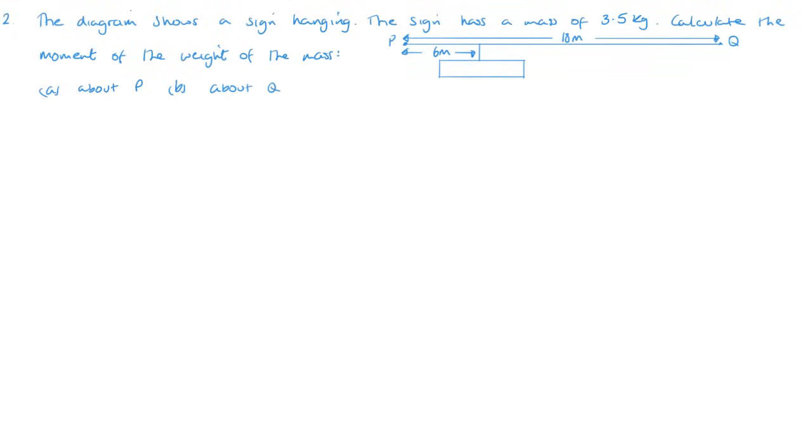Question two shows a sign hanging. The sign's mass is 3.5 kilograms, so that is 3.5 G newtons hanging down. Calculate the moment of the mass about P. So that's going to be 3.5 G times by 6, because that's the perpendicular distance. So 3.5 times 9.8 times 6, and that is 205 Newton meters. And that will go about P, it will go this way around P, so it's going clockwise.